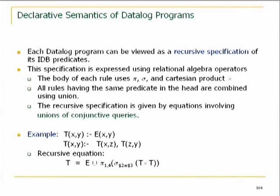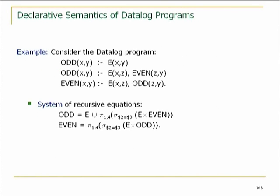If you give a datalog program with many recursive predicates, for every recursive predicate you write an equation. You take the expression on the right-hand side — that's a conjunctive query, so you can write it in algebra — and combine the right-hand sides of different rules for the same predicate using union. For instance, for transitive closure with one recursive predicate T, we get: T = E ∪ π_{1,4}(σ_{2=3}(T × T)). That's a recursive equation.